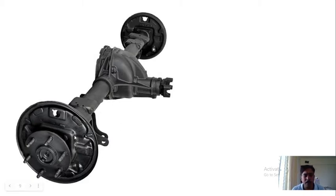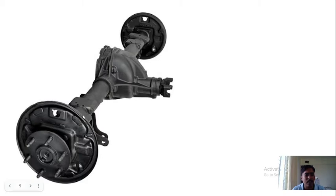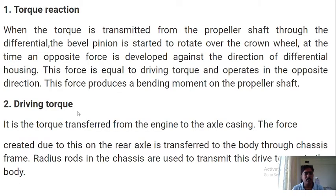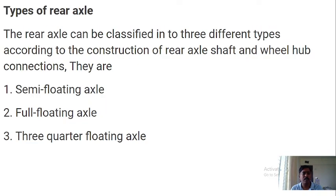Looking at this photograph, power is coming from the engine to the gearbox, then through the propeller shaft. This has got the differential, and the axle is mounted in between. This is the outer casing, and you can see there is a space for the leaf spring or whatever suspension is provided. The wheel is mounted on that axle. The bearings and all these things support the weight here, and we can see the reaction, the side thrust, and the weight of the body.